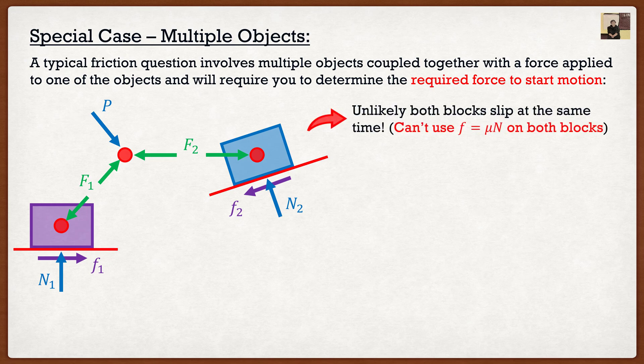It's very unlikely that the blue box and the purple box are going to slip at the same time. Remember that formula that we have f is equal to mu times n, that is assuming our box is just on the verge of slipping. If we were to look at this scenario, if you guys were to think about real life and I were to press on things,